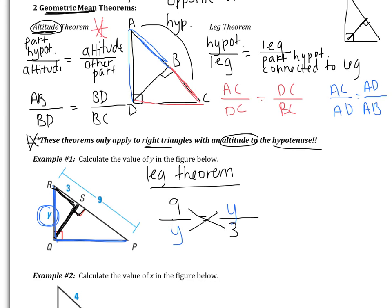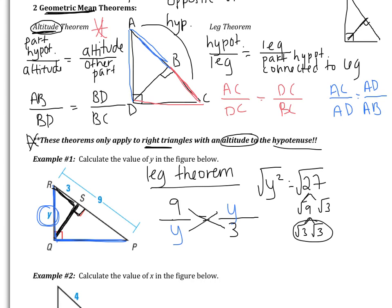Using cross products: y times y is y squared, and 9 times 3 is 27. I want an exact answer, so I take the square root. 27 is 9 times 3, and 9 is 3 times 3. I have a pair of 3's and one 3 left over, so my answer becomes 3√3. One of the pair comes outside, the remaining 3 stays inside. So y equals 3√3.